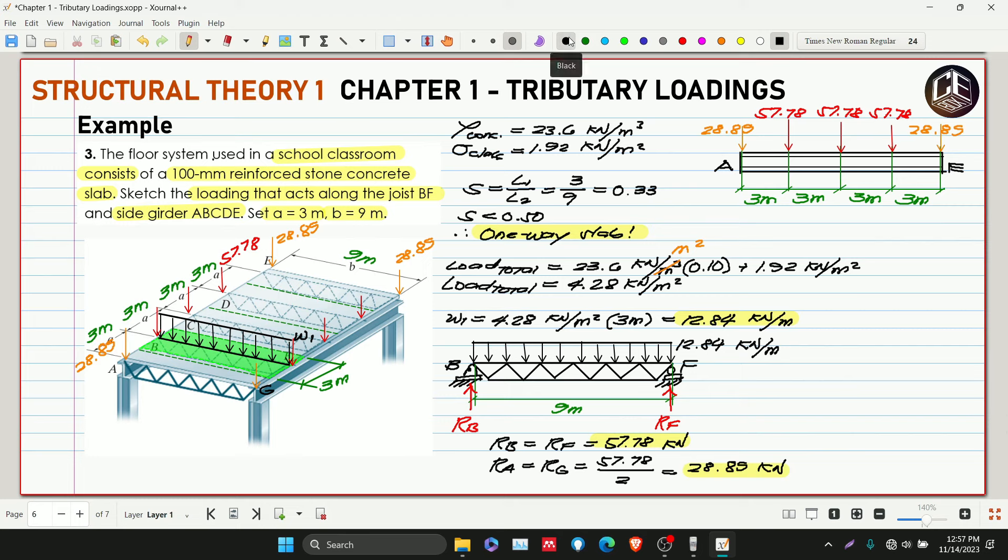This is fairly simple because it's just one-way slab. Don't get confused - we can't distribute these loadings along 3 meters. That would mean the supports are oriented this way, but our supports are actually here. If the beam sags, its behavior will be like this because the supports are oriented this way.